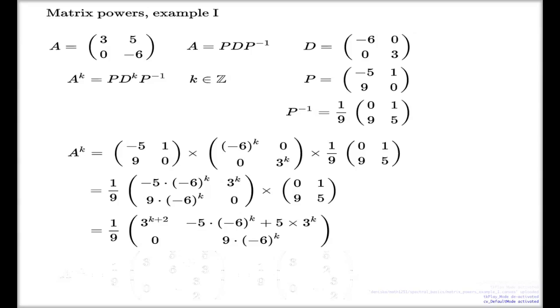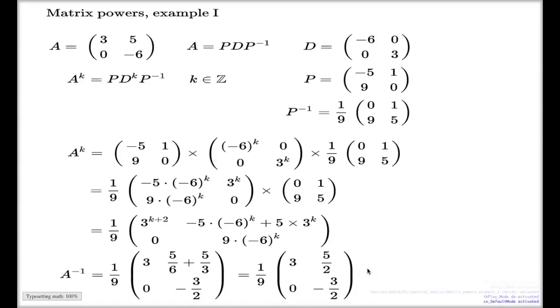As a double check, I always recommend do your double check. We can, via this formula, compute the inverse of A. All I have to do, I have to put k equal negative 1 across this formula to come up with the matrix for the inverse. If I do that, that will be 1 on 9. Here will be 3. k is negative 1. Here will be 5 on 6. And here will be 5 on 3. Here is 0. And here 9 on 6 or 3 on 2. With extra negative, obviously. Or if you simplify this, that's the formula for the inverse.